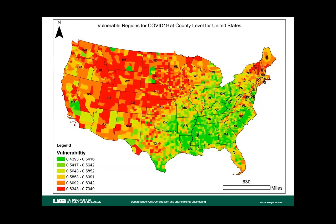After obtaining our rankings, we combined them with all normalized factors. The resulting map shows vulnerability on a scale of 0 to 1. Keep in mind this does not show the number of cases — rather, it represents vulnerability to COVID-19. Social distancing, the most important factor, was measured around May 26th, so at that time the red regions were likely not practicing good social distancing. The map represents results around that time period, but revisiting the AHP ranking system in the future could improve output quality.